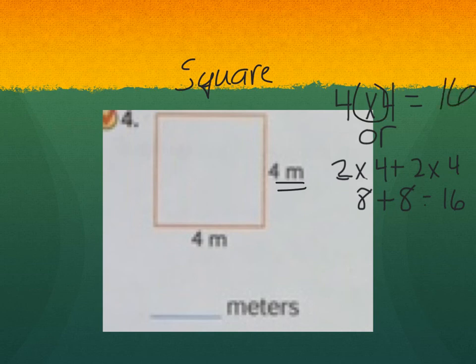Or I could have applied the perimeter formula, that mathematical rule: 2 times 4 plus 2 times 4. So 2 times 4 is 8, and 2 times 4 is 8, and 8 plus 8 is 16. So the perimeter of this square is 16 meters.